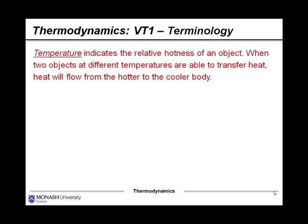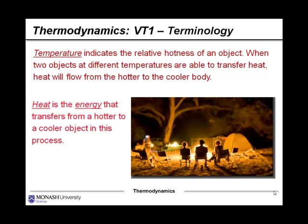Temperature is something that everybody is familiar with, but what does it mean with respect to chemical thermodynamics? It indicates the relative hotness of an object. When two objects are at different temperatures, they're able to transfer heat, and heat will flow from the hotter to the cooler body. If it's a hot day in summer we often talk about the temperature or we talk about the heat, and we kind of use those two words interchangeably — but it's a little bit different here. Temperature indicates the relative hotness of an object, while heat is the energy that transfers from a hotter to a cooler object in this process.